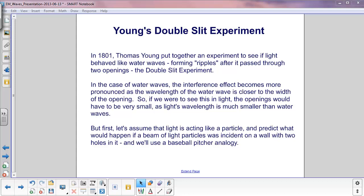But first, let's see if we can explain this using Newton's optics. We're going to assume light is a particle, and we're going to predict what would happen if a beam of light particles was incident on a wall with two holes in it, and we'll use a baseball pitcher analogy.